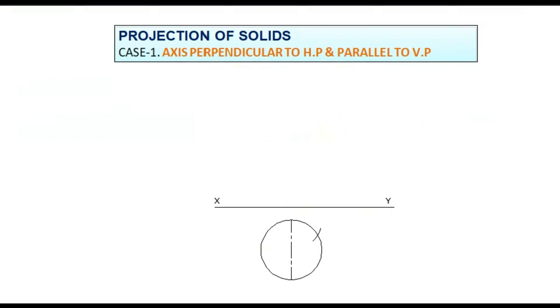Draw arcs on the circles from the endpoints of the axis. Join these points to complete the hexagon. Name the corners of the hexagon with numbers.